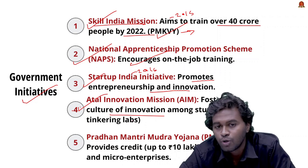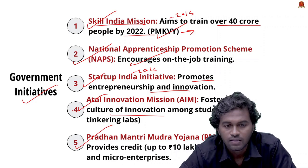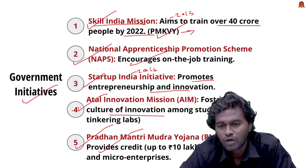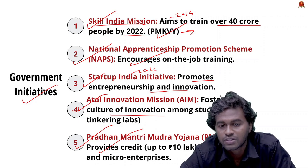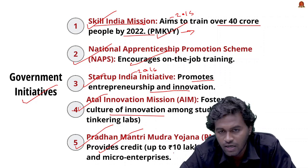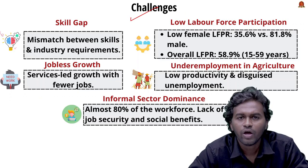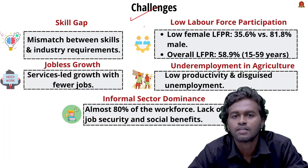The Atal Innovation Mission includes programs like Atal Tinkering Labs, where students can put their innovations into practice. The fifth scheme is the Pradhan Mantri MUDRA Yojana, which provides credit facilities to small and micro enterprises — up to ₹10 lakh under three categories: Shishu, Tarun, and Kishore.